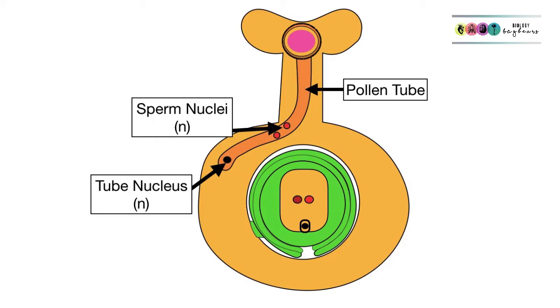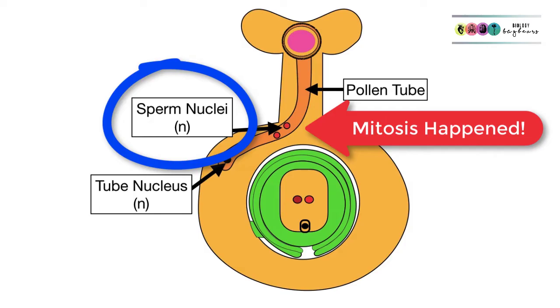Most of the time, the generative nucleus enters that pollen tube and undergoes mitosis in the pollen tube to produce those sperm nuclei, those two haploid sperm nuclei.